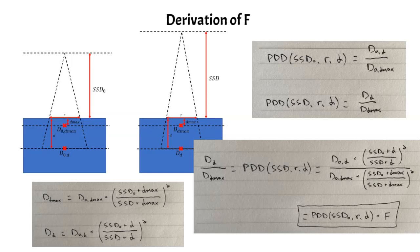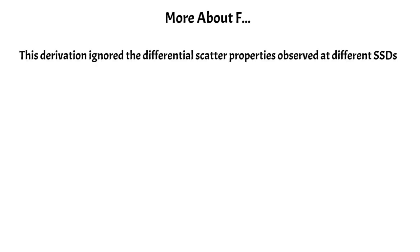So I do want to talk a little bit more about F because there are some other important things I want to point out. One is that the derivation I just did actually ignored the differential scatter you get at different SSDs. If you go back and look at the figure that I presented of the geometry of how we derive this, there are actually, you can see that we are irradiating different amounts of phantom. And so we actually get a different amount of phantom scatter that originates, which would alter our dose. But that effect is relatively small, likely within half a percent or so. So we just ignored it.